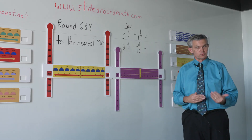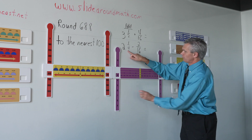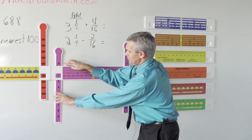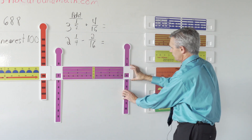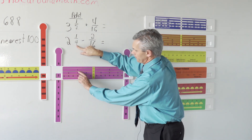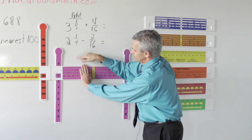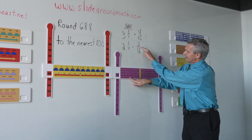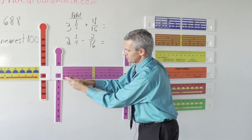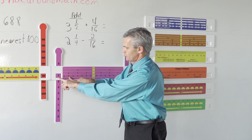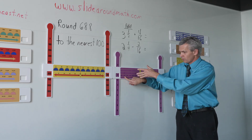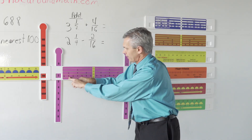If you want to use this manipulative to subtract, you can do two and one fourth minus two sixteenths. You have the whole number two on the left, the whole number three on the right. Two and one fourth is right here. Because one fourth is equivalent to four sixteenths, you drop straight down. Then you take away two sixteenths and go to the left: one, two. Some students would say two and two sixteenths, but the best answer is two and one eighth.